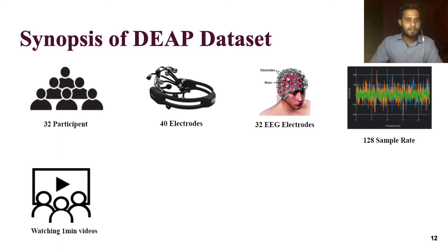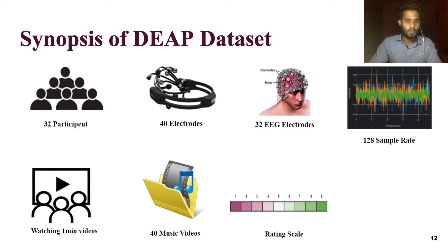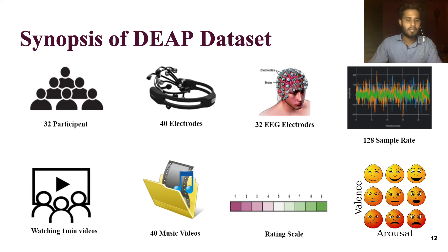Here used 128Hz frequency as sampling rate. For collecting data, every person is shown 1 minute long music videos. Total number of music videos are 40. After watching those videos, everyone rated them following a continuous scale from 1 to 9. These ratings are done based on arousal, valence, dominance and liking.